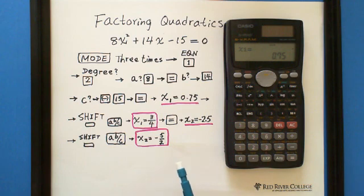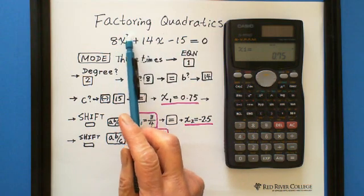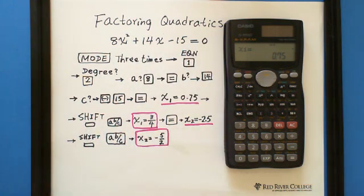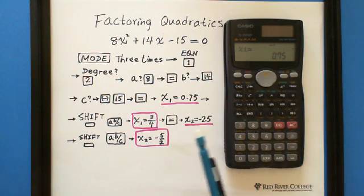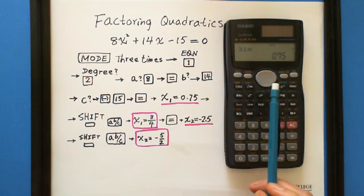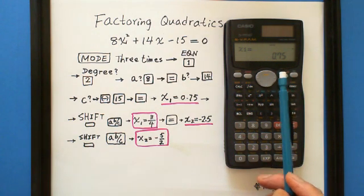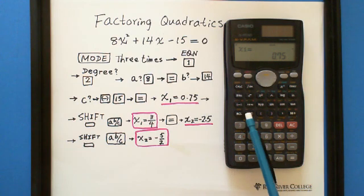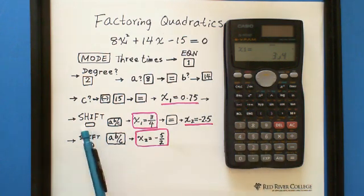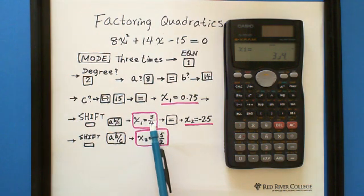You got x1 equals 0.75. Because this is a quadratic equation, there are two solutions. We want to show the answer in fractions, so we hit shift A, B, C. It gives you x1 equals 3 over 4.